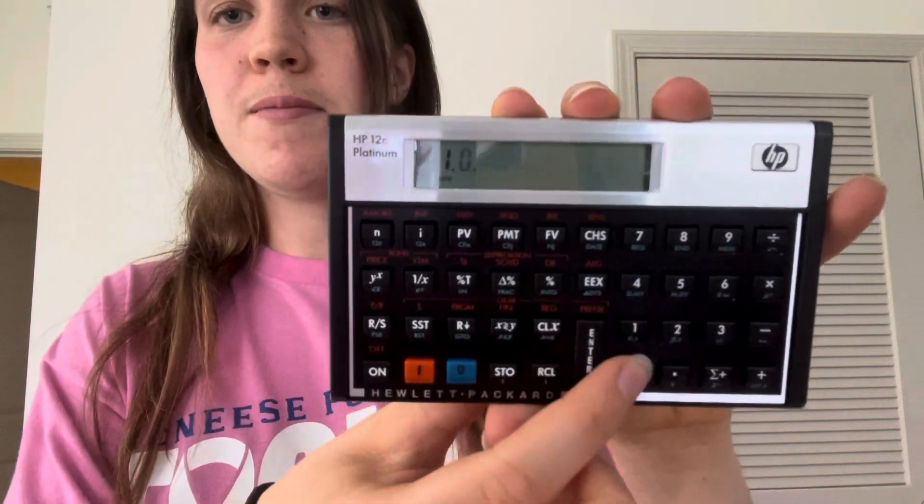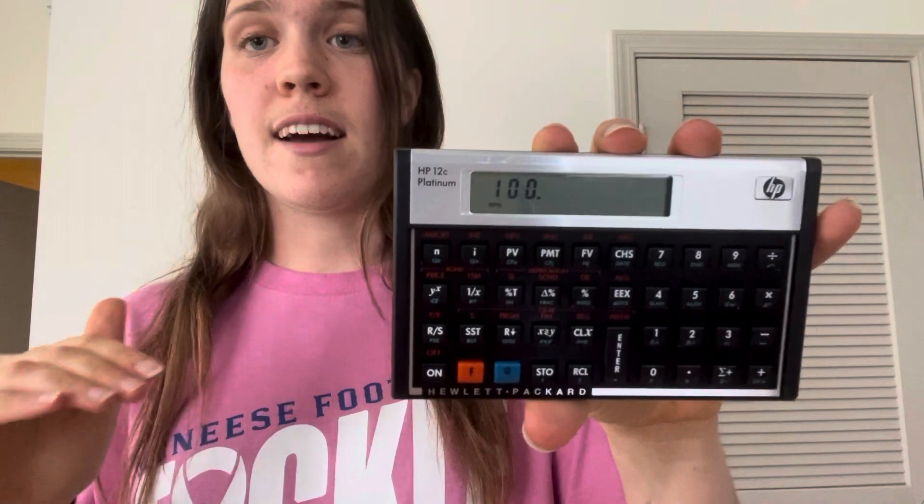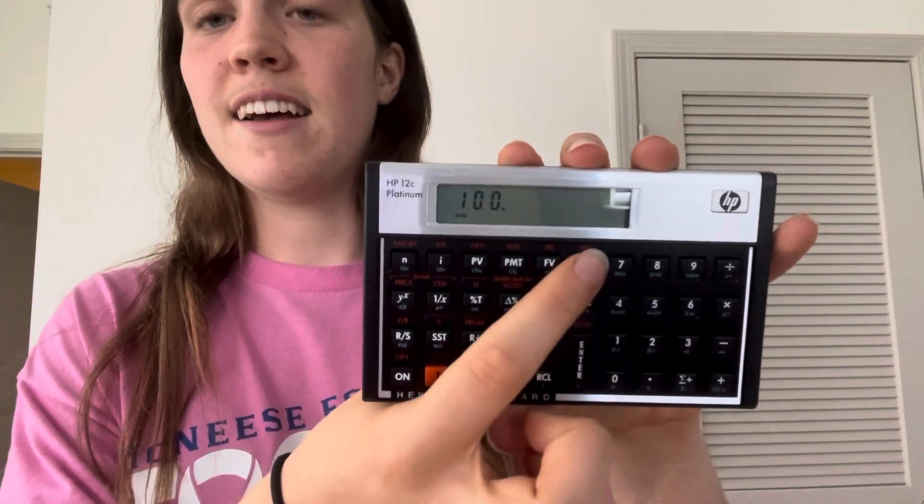First let's go a hundred, and this is where this calculator will give you difficulties. You need to make this number negative since it's going out, since you're investing in it. Otherwise it will say error. So you go a hundred, and then CHS will make it negative. Then let's assign it to present value, PV.